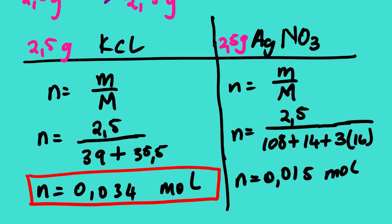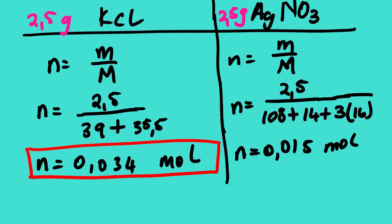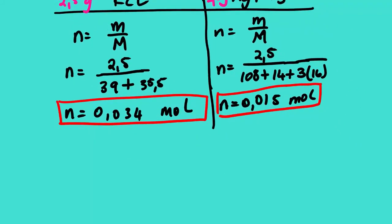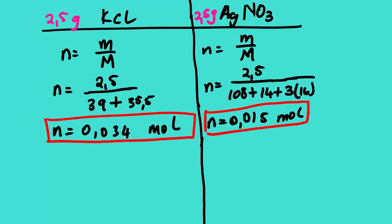For silver nitrate: the molar mass of silver is 108, plus nitrogen is 14, plus 3 atoms of oxygen which is 48, giving 0.015 mol of silver nitrate. We consider these as the first number of moles. By determining the limiting reagent, let us start with potassium chloride — how much potassium chloride is needed to react with this number of moles of silver nitrate completely?